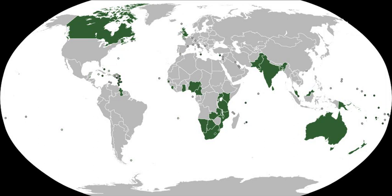The Commonwealth has adopted a number of symbols that represent the association of its members. The English language is recognized as a symbol of the members' heritage, as well as being considered a symbol of the Commonwealth, and recognition of it as the means of Commonwealth communication is a prerequisite for membership. The flag of the Commonwealth consists of the symbol of the Commonwealth Secretariat — a gold globe surrounded by emanating rays on a dark blue field. It was designed for the second CHOGM in 1973 and officially adopted on 26 March 1976. 1976 also saw the organization agree to a common date on which to commemorate Commonwealth Day, the second Monday in March.